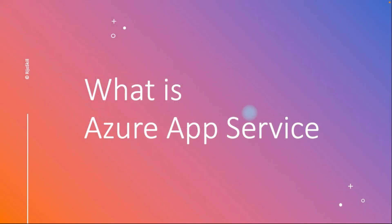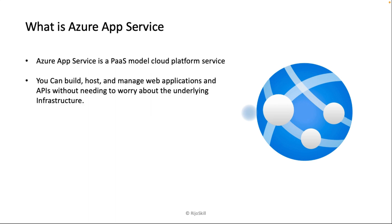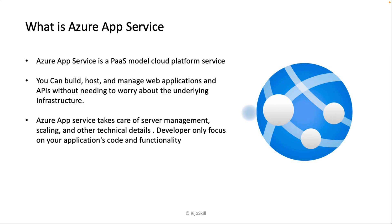So what is Azure App Service? Simply, Azure App Service is a PaaS model — Platform as a Service — because Microsoft provides all the infrastructure. You just need to consider the coding and functionality, so you can build, host, and manage your web applications and APIs without needing to worry about any underlying infrastructure. Azure App Service takes care of server management, scaling, and other technical details.